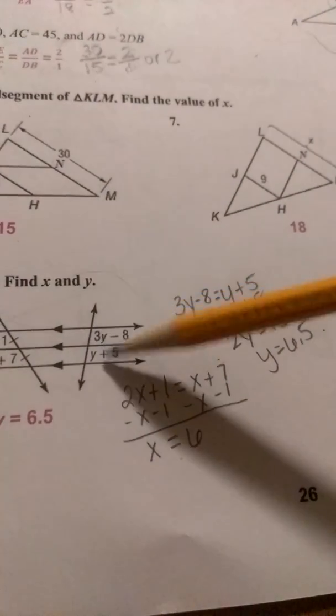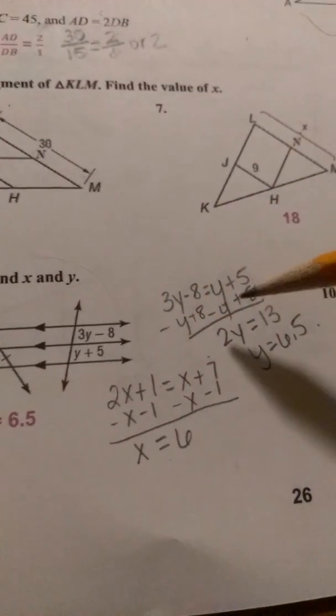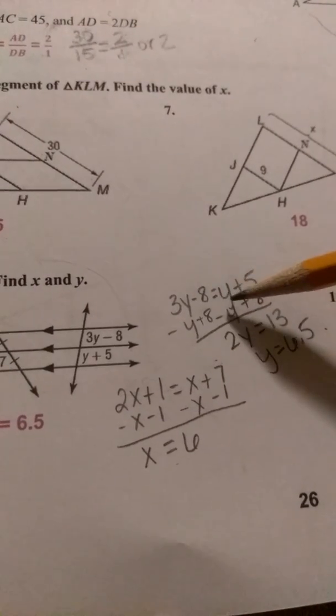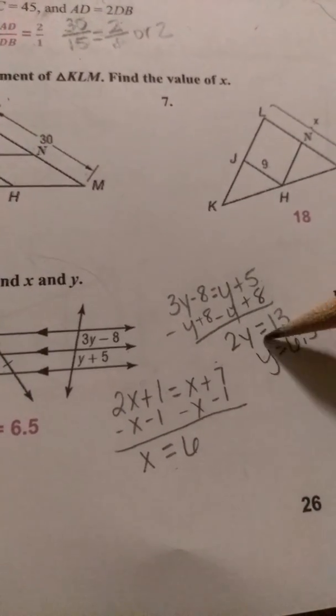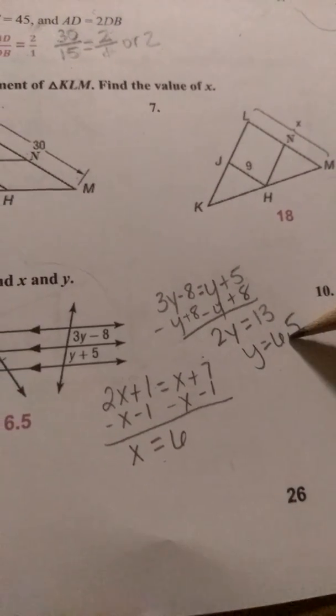And then these two segments here should be equal to each other, since all of these are parallel. And so you set those equal to each other. 3Y minus 8 is equal to Y plus 5. And so it should give you, after solving, Y is equal to 6.5.